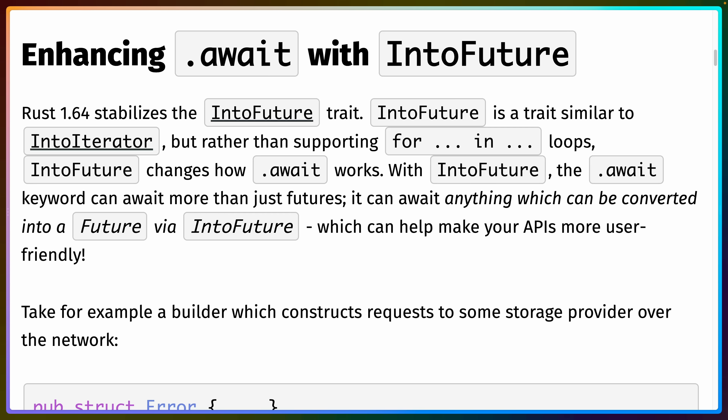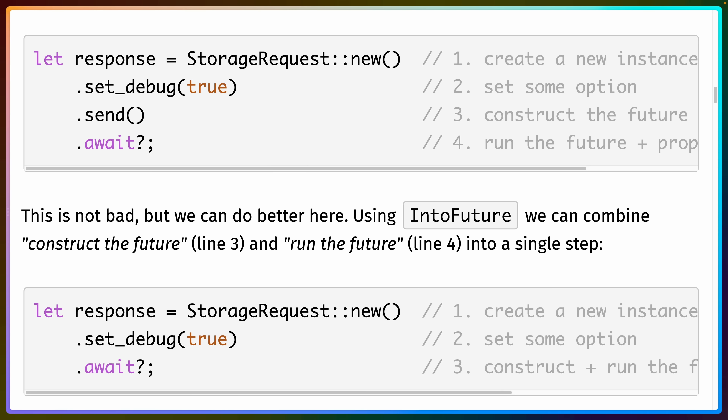The first big new feature in Rust 1.64 is IntoFuture. IntoFuture is actually a feature from the original Async/Await RFC that just took a little more time to get into the language. If you're already familiar with things like IntoIterator, or the way the question mark operator calls Into on error types, this is the same thing but for Futures. The await keyword can now run IntoFuture for anything that implements IntoFuture.